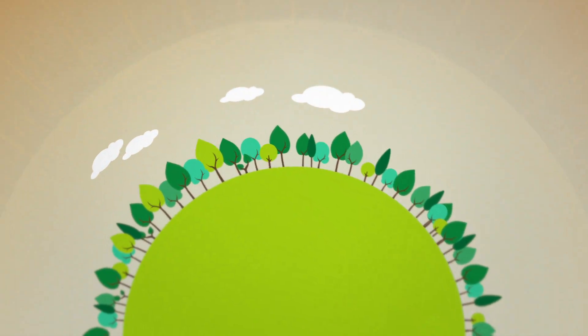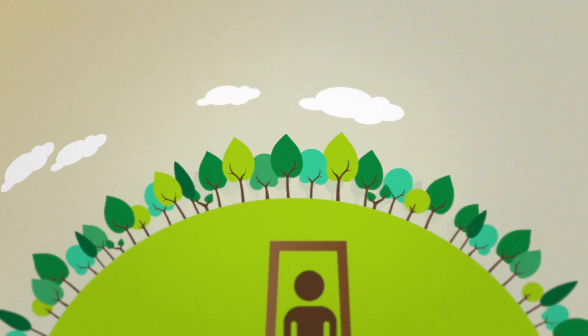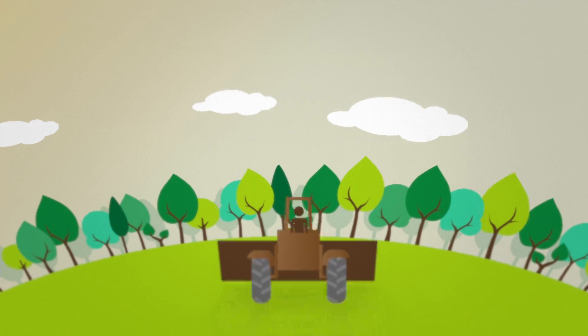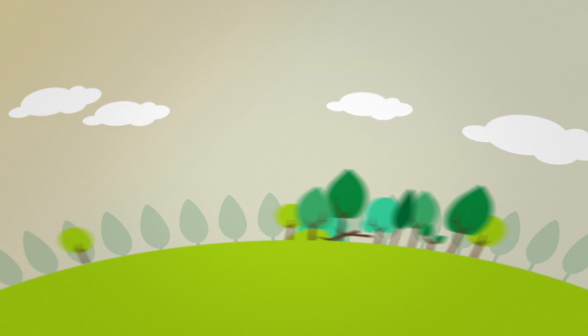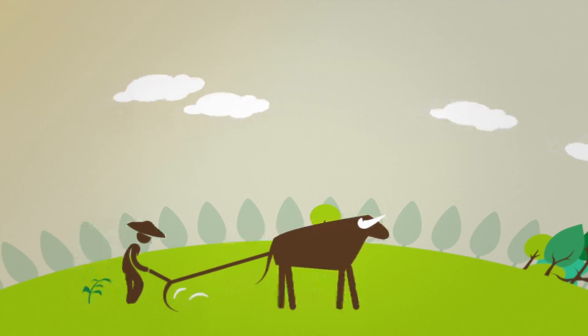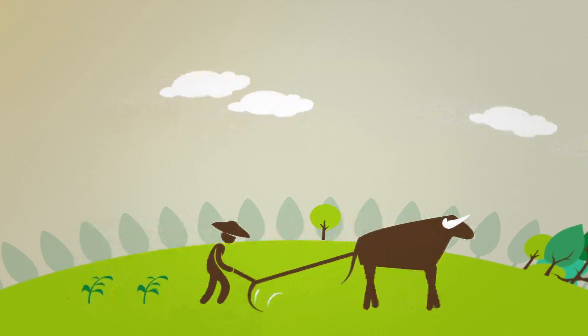At the dawn of the agricultural revolution, forests covered almost half the earth. In the 8,000 years since, nearly half of those forests have been cleared or degraded, making way for croplands, livestock grazing, and human settlements.